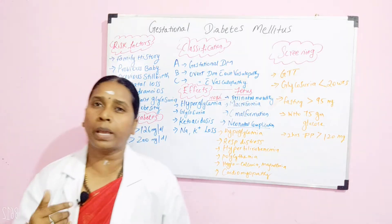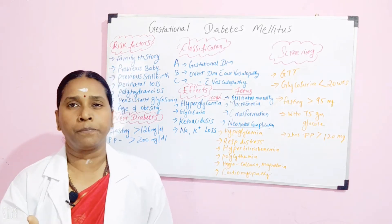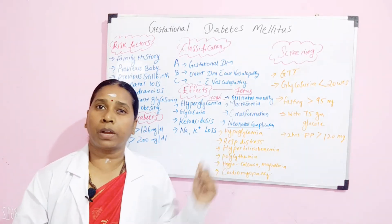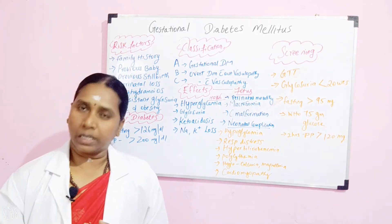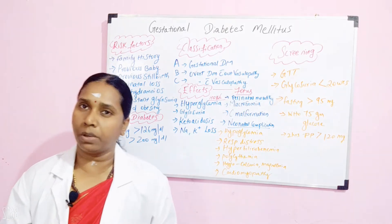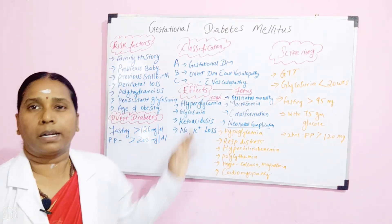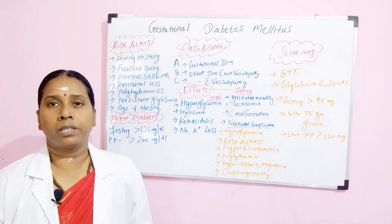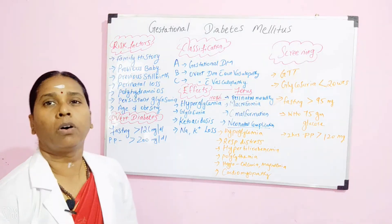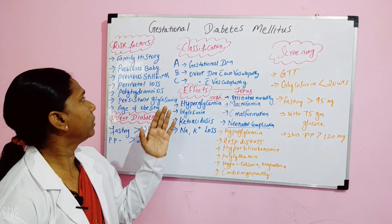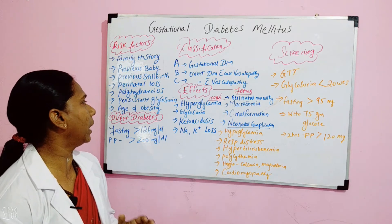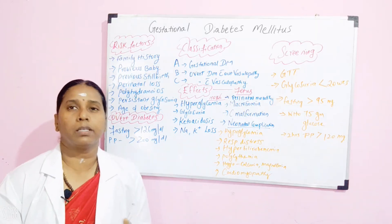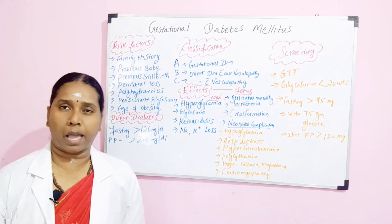Then comes age: when the age of the mother is above 30, you have to consider that she has a risk of gestational diabetes. And the factor of obesity — when the mother is obese, she definitely has a risk of gestational diabetes. So the risk factors are: family history of diabetes, previous big baby, previous stillbirth, perinatal losses, polyhydramnios, persistent glycosuria, age above 30, and obesity.